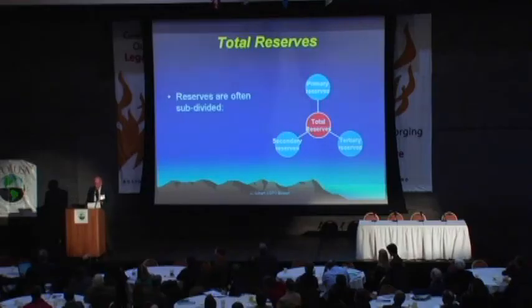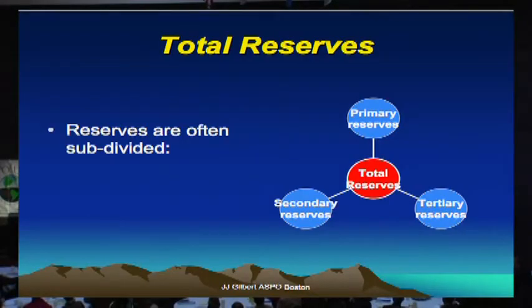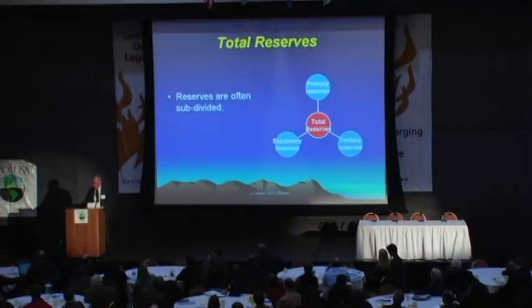The difficulty of access is tied up in economics. If we can drill more wells and know where to drill them, we can change the recovery efficiency. Recovery efficiency is a number we must bear in mind very carefully. We divide reserves into what we call primary, secondary, and tertiary reserves, which we add together to get our total reserves.